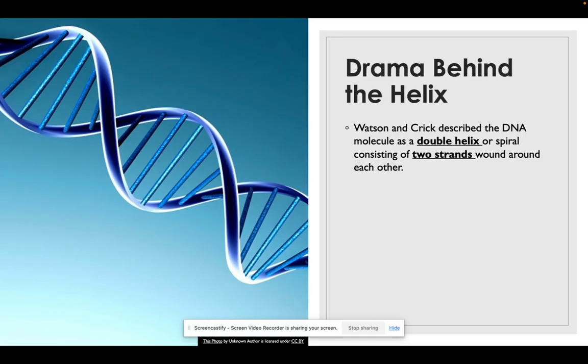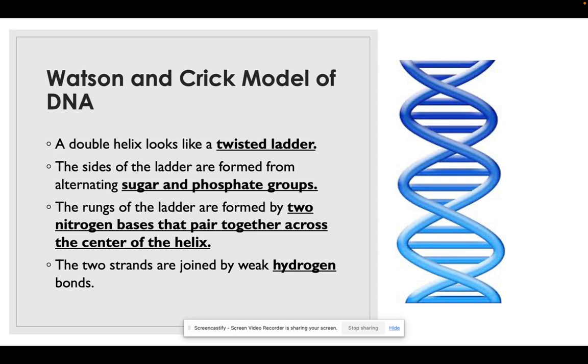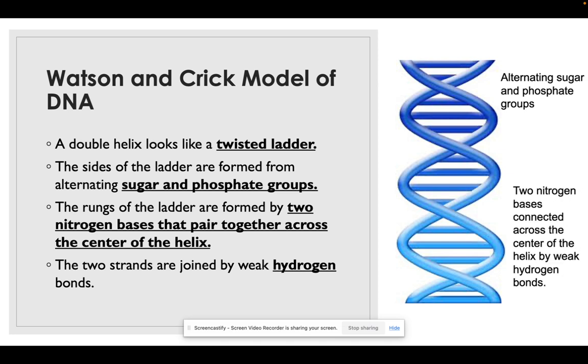So Watson and Crick described this DNA molecule as a double helix or spiral consisting of two strands that are wound around each other. The double helix does look like a twisted ladder. In the Watson and Crick model of DNA, the sides are formed by alternating sugar-phosphate groups and the rungs are formed by two nitrogen bases that pair together across the center of the helix, joined by a weak hydrogen bond.